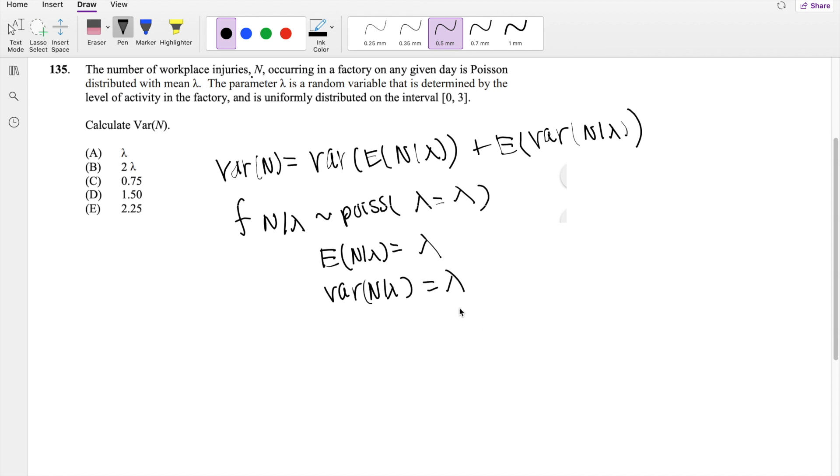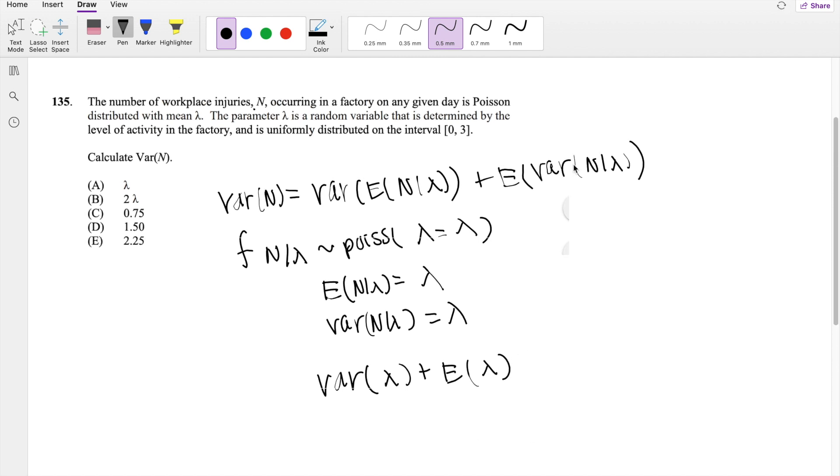So knowing that, we can just plug those in here. So then variance of n given lambda would just be variance of lambda, plus the expectation of variance given that thingy. That's going to be lambda here as well. Now this is just a simple problem, because we know lambda by itself is a uniform distribution on the interval 0 to 3.